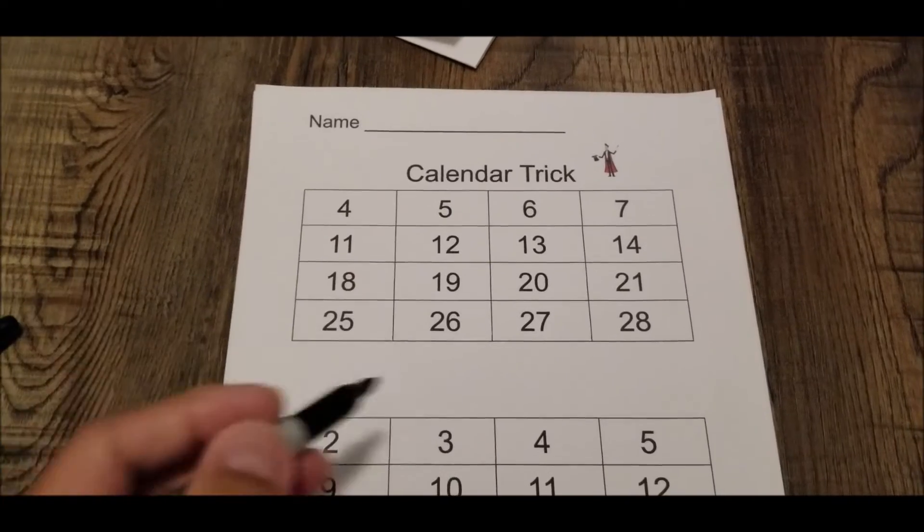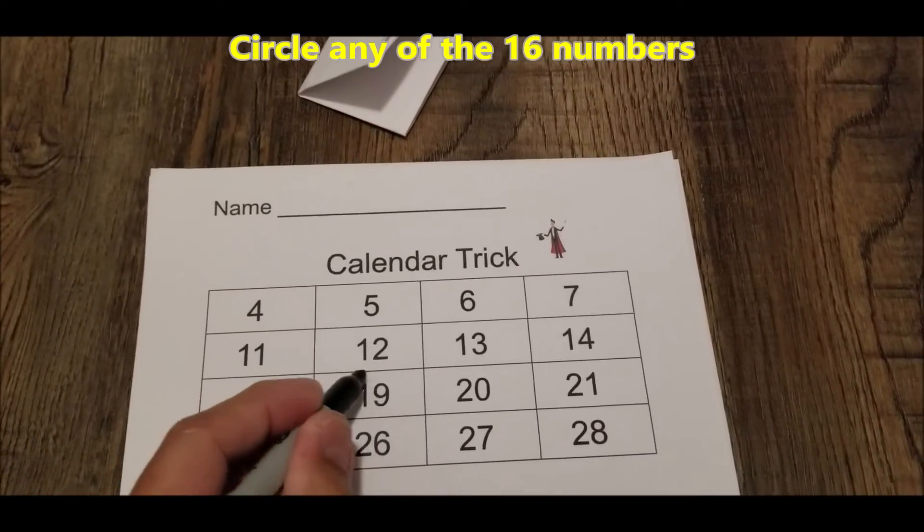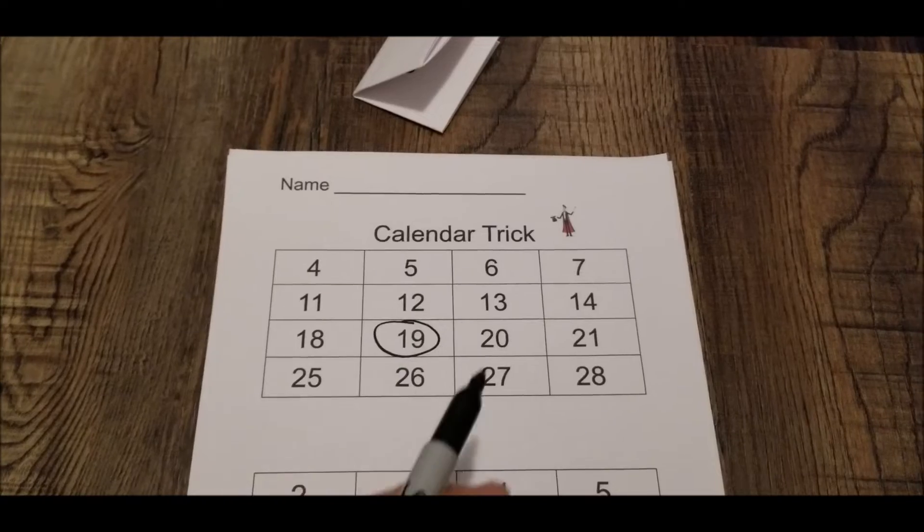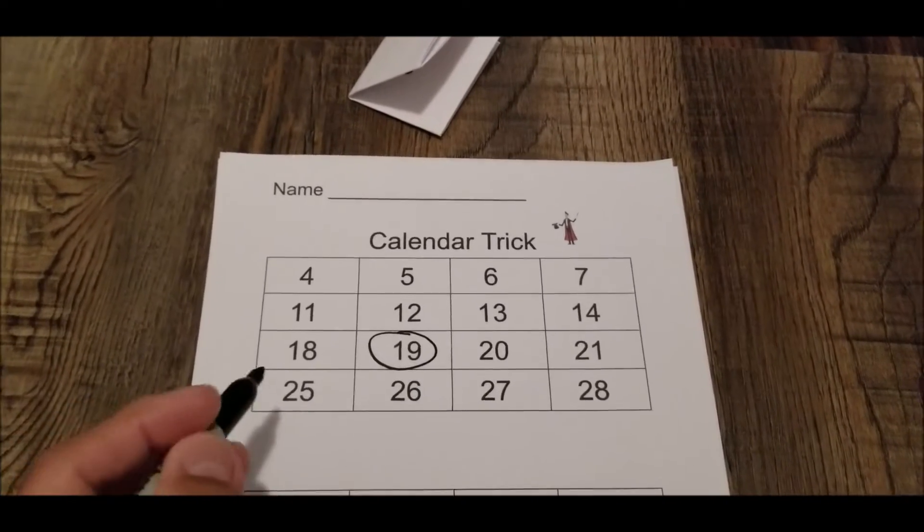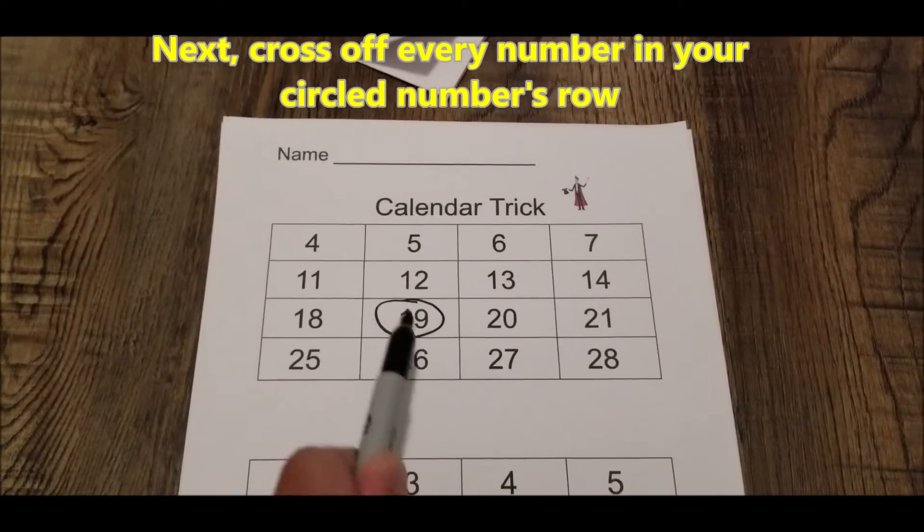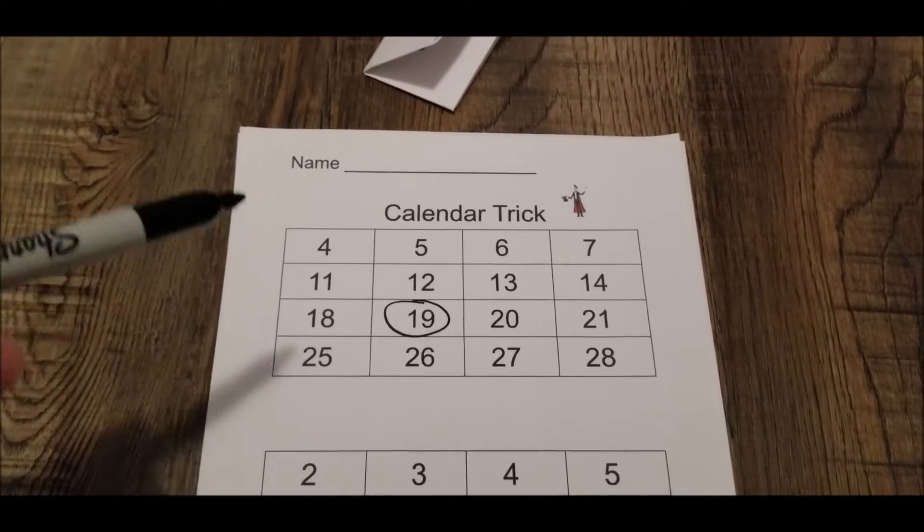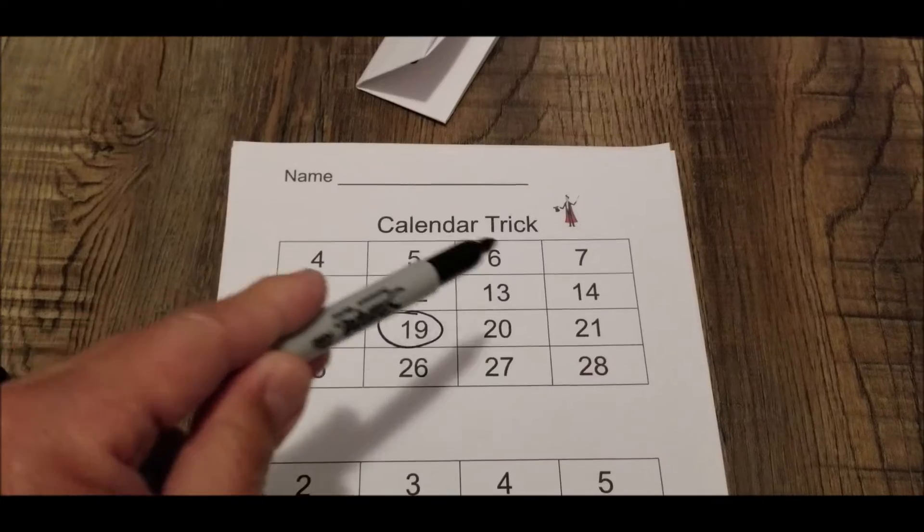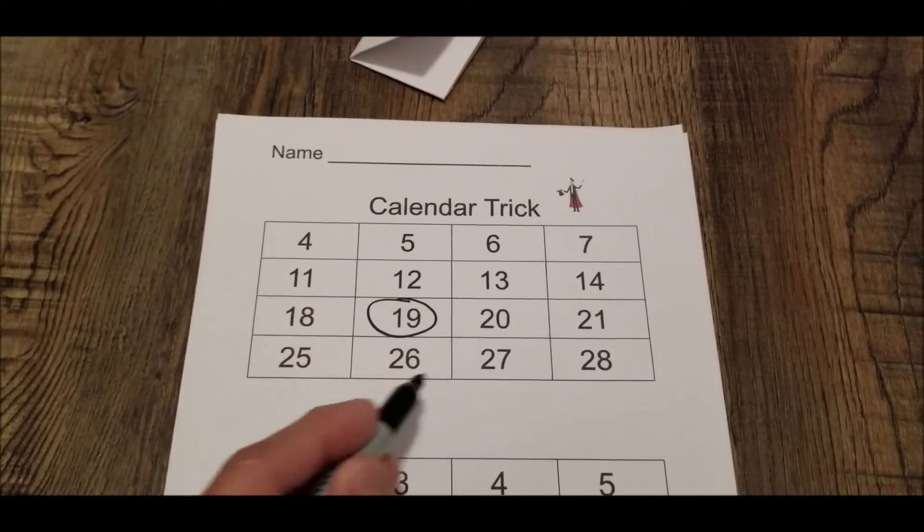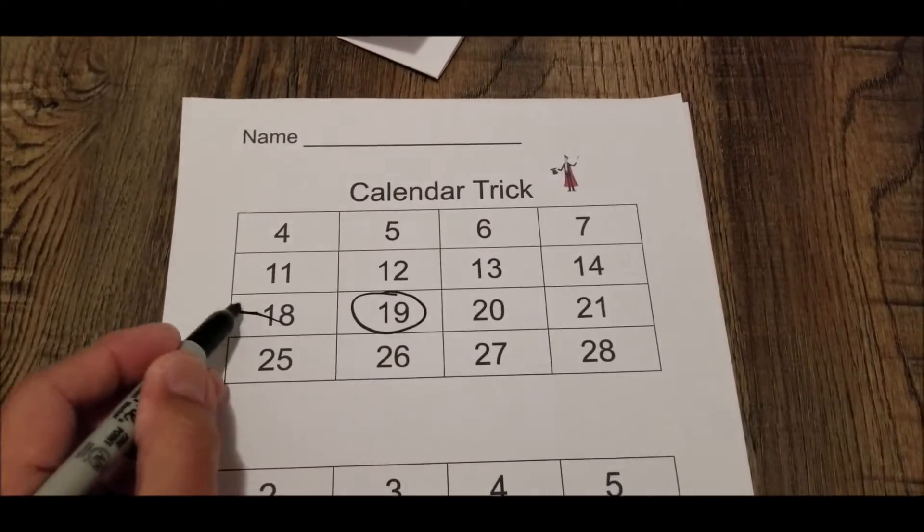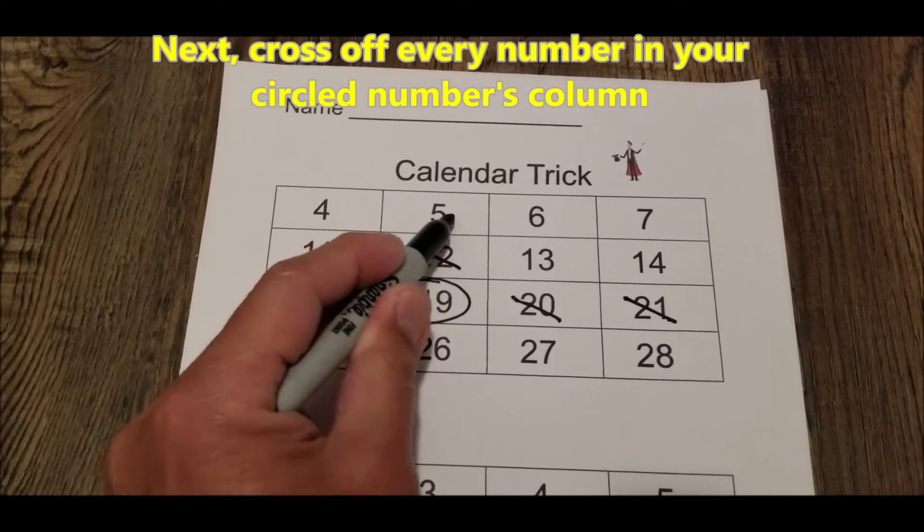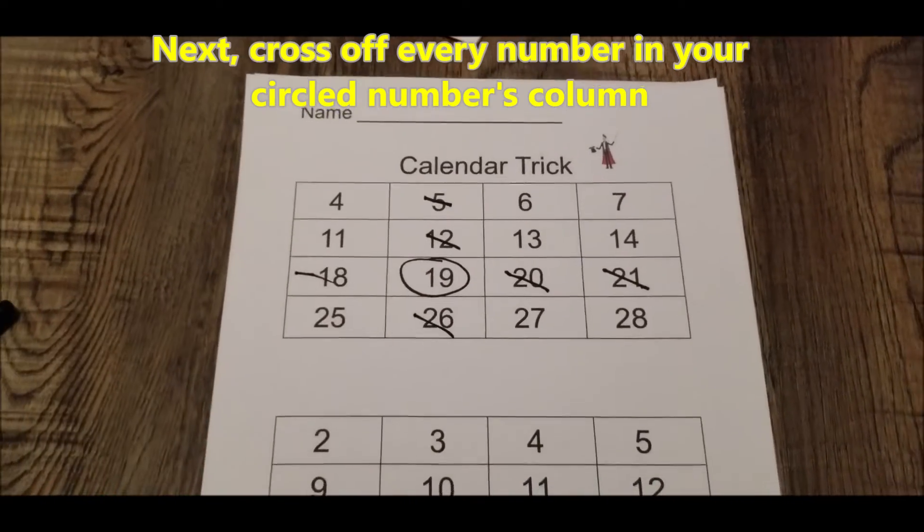This is how this trick works. Let's do this first one up here. You're just going to circle any of the 16 numbers. So let's say you circled 19. And again, I'm going to be able to read your mind. So you're going to circle any number here. And what you're going to do is cross off when you pick your number, cross off every number in your circled numbers row. So you can do this right now where you're sitting. You can pick any of the numbers or you can just write these numbers down on a piece of paper and pause this video. But let's say I pick the number 19. I'm going to cross off every number in its row and I'm going to cross off every number in its column.